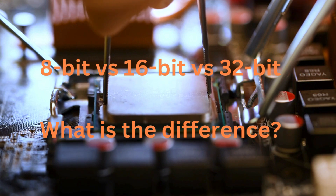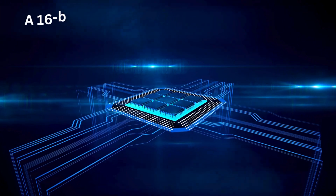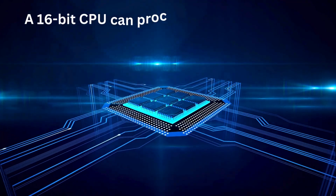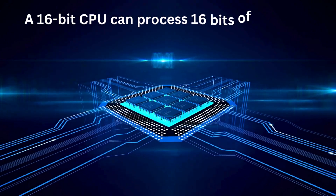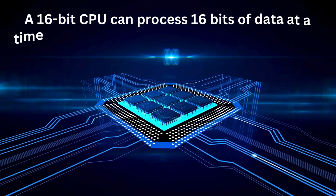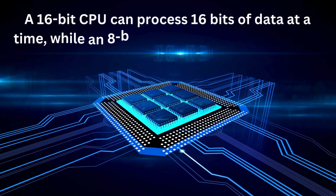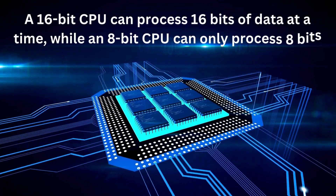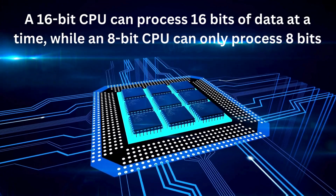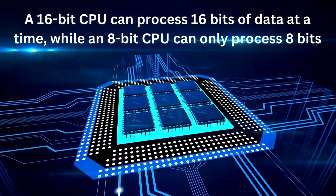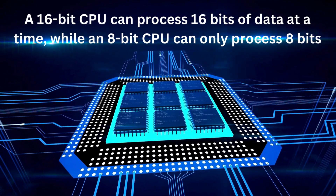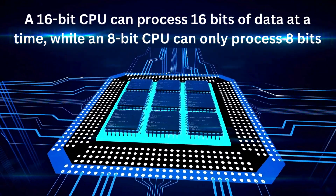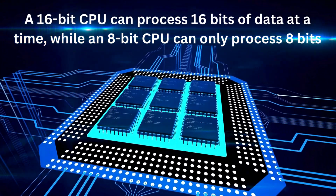A 16-bit CPU can process 16 bits of data at a time, while an 8-bit CPU can only process 8 bits. This means that a 16-bit CPU can handle twice the amount of data in a single operation.